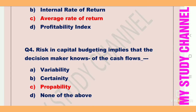Next question: risk in capital budgeting implies that the decision maker knows the probabilities of the cash flows. The answer is probability. Risk in capital budgeting implies that the decision maker knows the probabilities of the cash flows, so option C is the right answer.